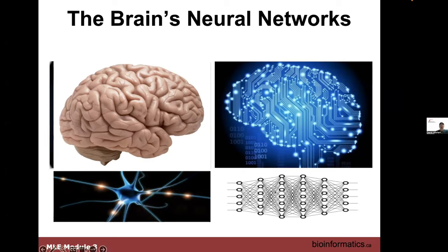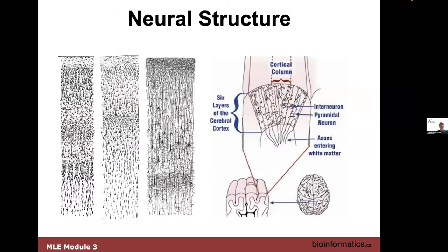All that neural activity can really be described in a connection diagram, which looks a lot like a neural net. These are some drawings from a brain slice done probably in the 1800s, where they took cortical layers and drew out all of the cells.